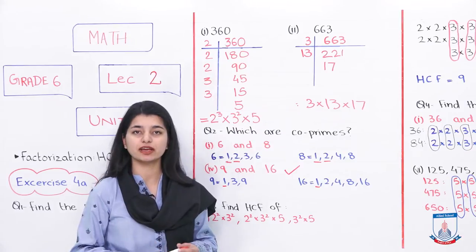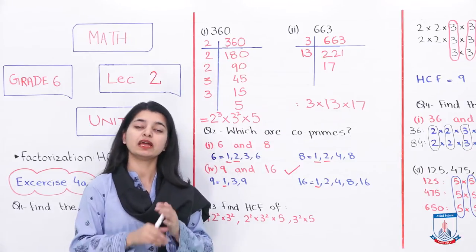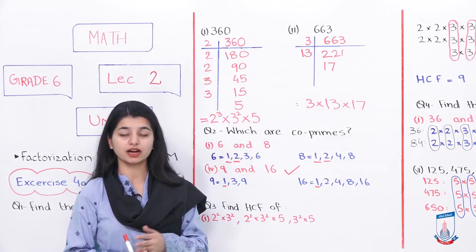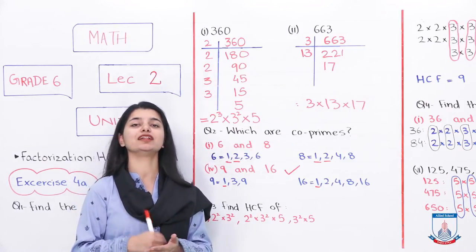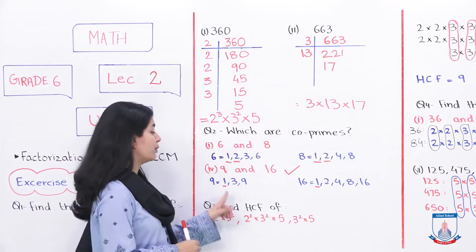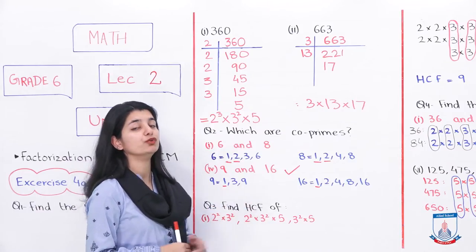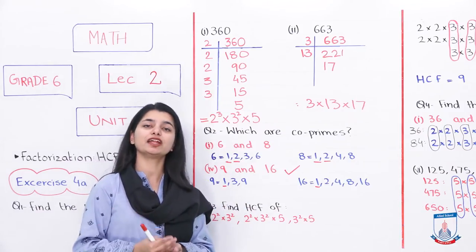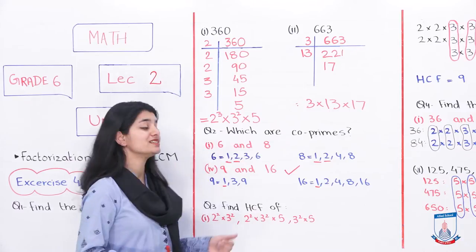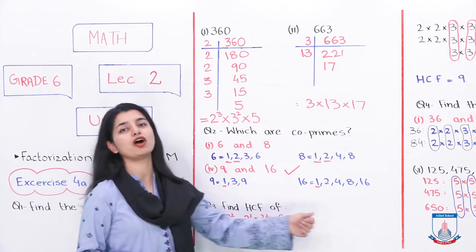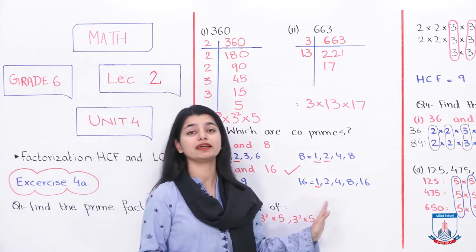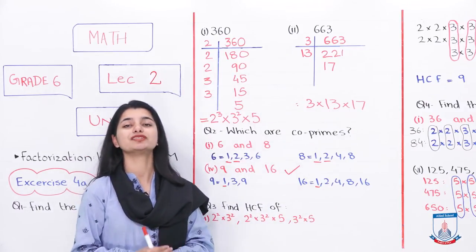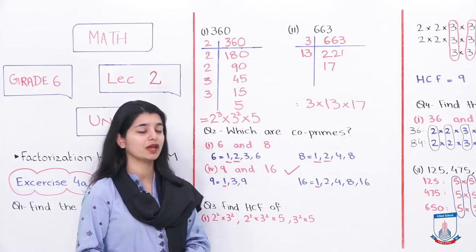For the remaining three parts, look at the common factors as well. If they have more than one common factor besides one, they are not co-primes. If their only common factor is one — just as 9 and 16 have — then they are co-primes.